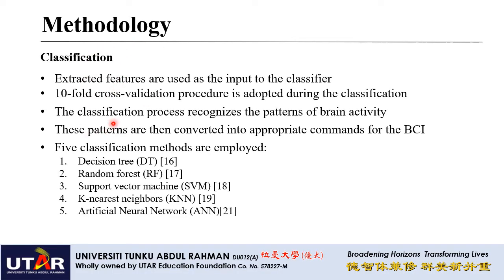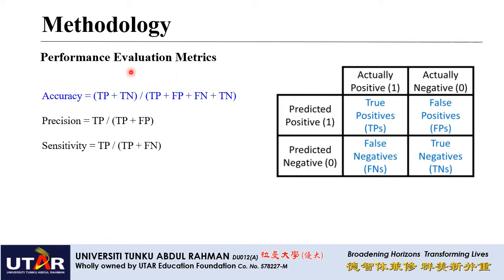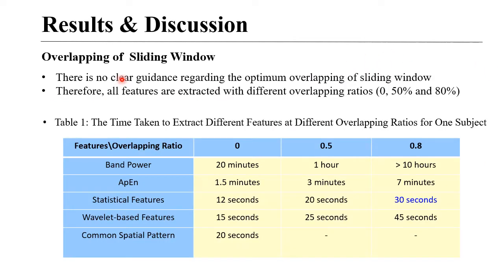For classification, we used the ten-fold cross-validation procedure and five classification methods: Decision Tree, Random Forest, Support Vector Machine (SVM), K-Nearest Neighbors (KNN), and Artificial Neural Network (ANN). For performance evaluation, the metric of accuracy was used, defined as (True Positive + True Negative) divided by (True Positive + False Positive + False Negative + True Negative).